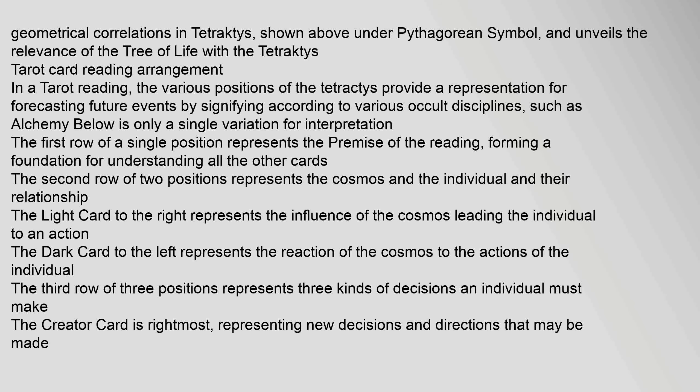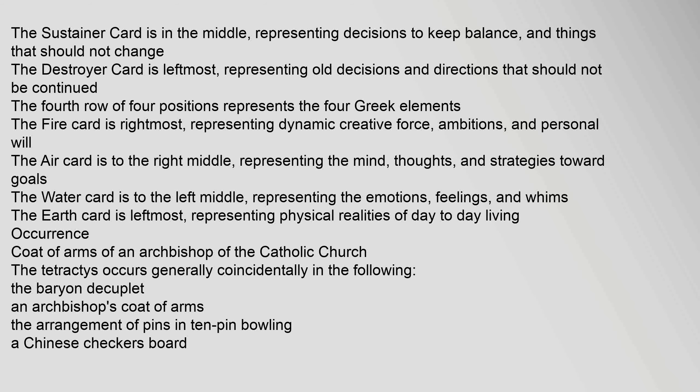In a tarot reading, the various positions of the Tetractys provide a representation for forecasting future events by signifying, according to various occult disciplines such as alchemy. The first row of a single position represents the premise of the reading, forming a foundation for understanding all the other cards. The second row of two positions represents the cosmos and the individual and their relationship. The light card to the right represents the influence of the cosmos leading the individual to an action; the dark card to the left represents the reaction of the cosmos to the actions of the individual. The third row of three positions represents three kinds of decisions an individual must make: the creator card (rightmost) represents new decisions and directions; the sustainer card (middle) represents decisions to keep balance and things that should not change.